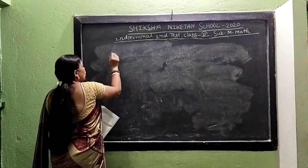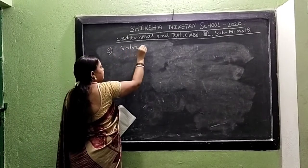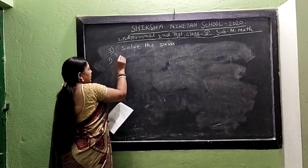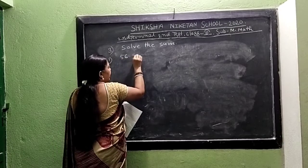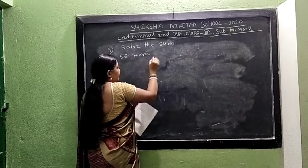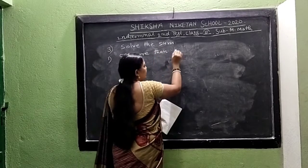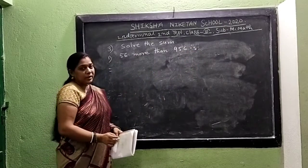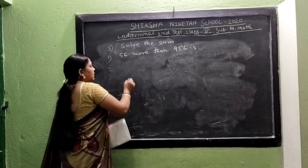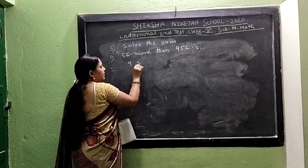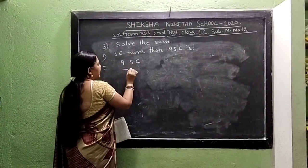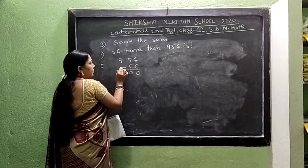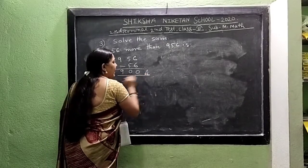Next matter is solve the sum. Now 56 more than 956 is what — the question asks more than. They will subtract those numbers. 956 is the bigger number, so we write it on the upper side: 956 subtract 56. 6 from 6 is 0, 5 from 5 is 0, no number above so we write 9. Answer is 900.